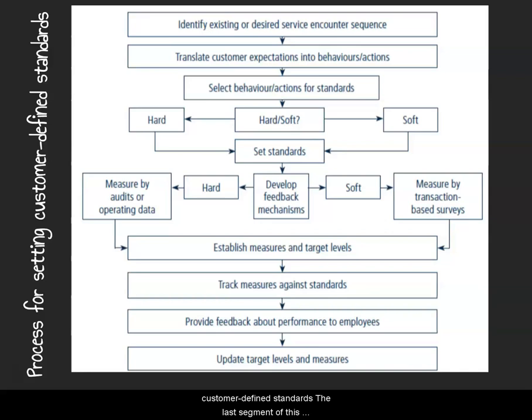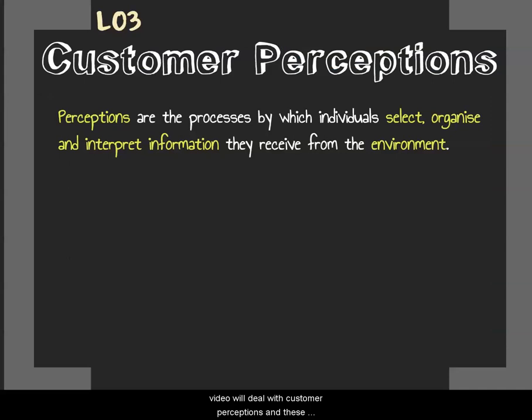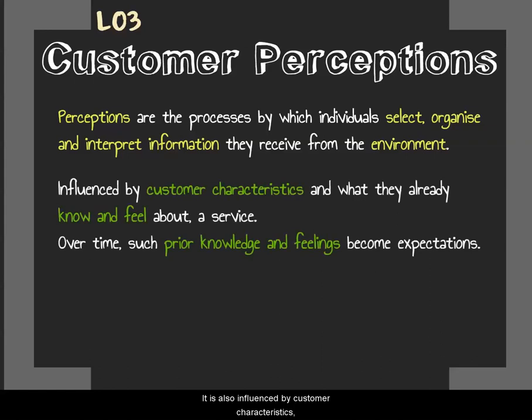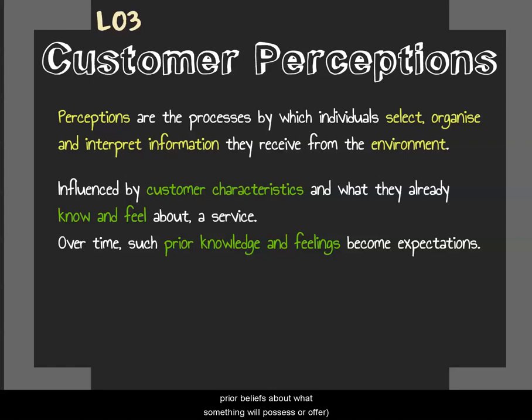The last segment of this video deals with customer perceptions — the process by which you as an individual select, organize, and interpret information received from the environment. If you went to KFC and it was filthy two out of three occasions, and your food was great only once, you organize and interpret this information and decide you have a negative perception towards KFC. It is also influenced by customer characteristics — notably what they already know and feel about a service — and over time such prior knowledge and feelings become expectations, that is, prior beliefs about what something will offer will inevitably become what you expect.